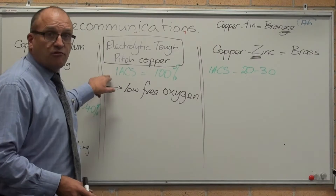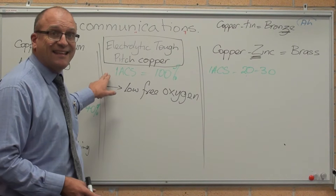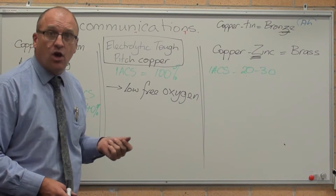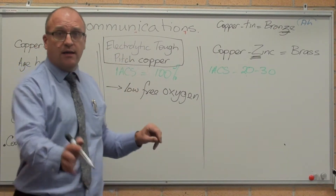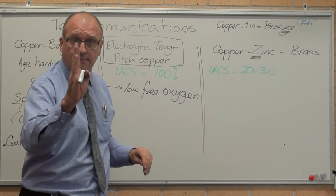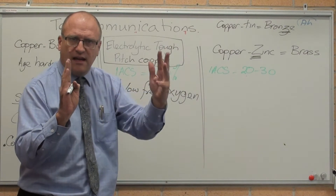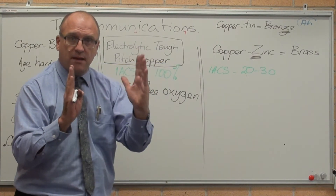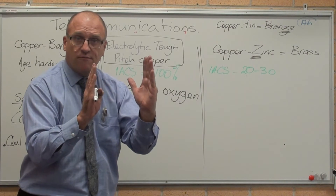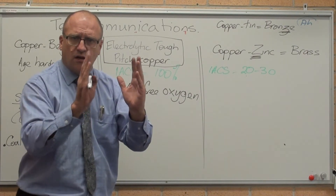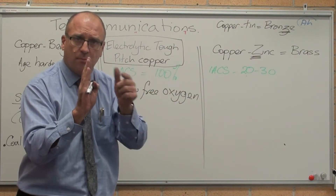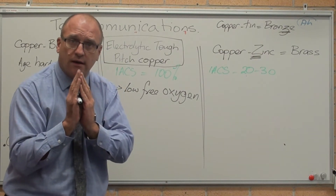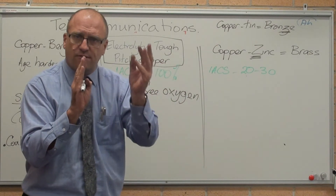Electrolytic tough-pitched copper has 100% conductivity according to the International Annealed Copper Standard — incredibly high conductivity. Why? Because it's electrolytically refined. You get a solid copper anode placed in a bath of sulfuric acid. It dissolves. You put a negative charge on your sheet of pure copper, and the copper comes across and sticks to it, electrolytically refined. The impurities dissolve in the sulfuric acid and fall out.